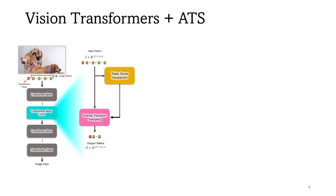As you can see, our adaptive token sampling approach is composed of two steps. The first step is token score assignment, and the second step is inverse transform sampling.